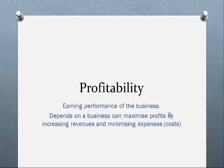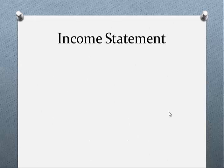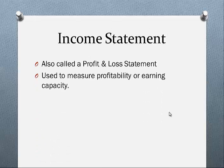Let's start with profitability. Simply, it's the earning performance of a business — it depends on how much a business can maximise its profits by increasing revenues and minimising expenses. The gap between revenues and expenses we want to be as big as possible, which represents the profit. The income statement, also called a profit and loss statement or revenue statement, is used to measure profitability and earning capacity — the ability to earn money given the amount of assets employed in the business.